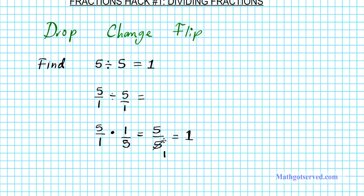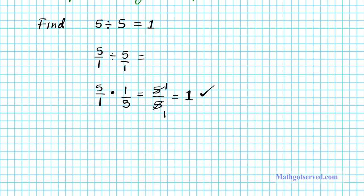5 goes in here once, and 5 goes in here once, so 1 over 1 is 1. We see that our procedure is in harmony with what we thought of earlier. Now let's go ahead and take a look at some examples.